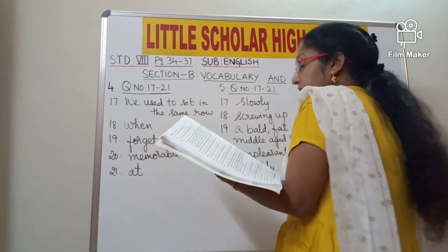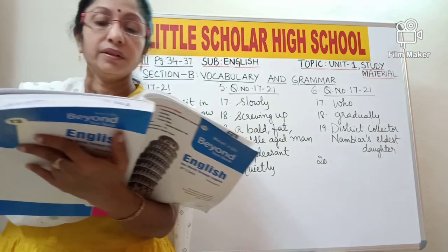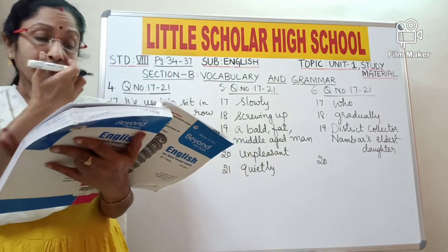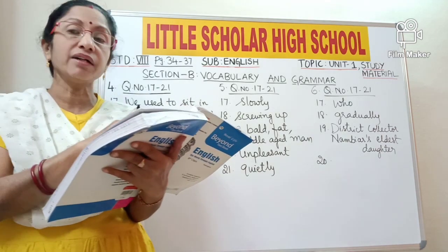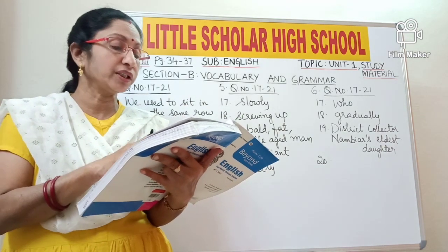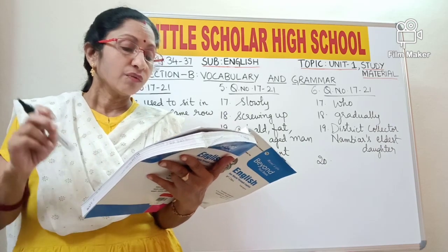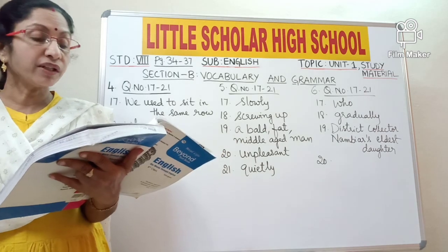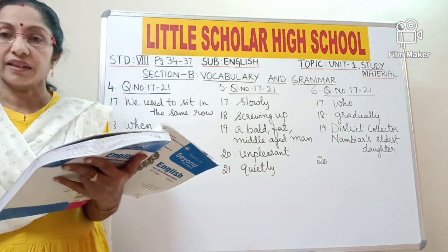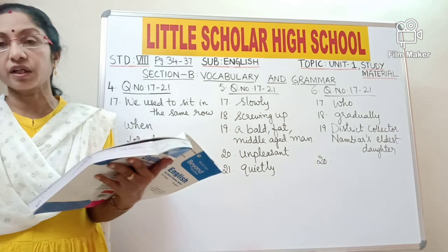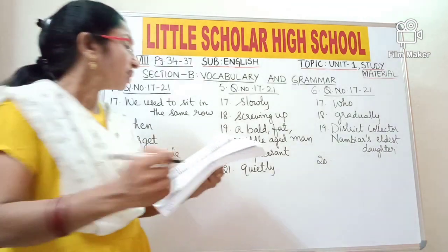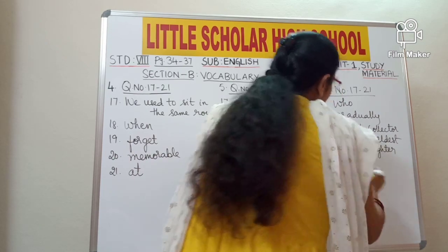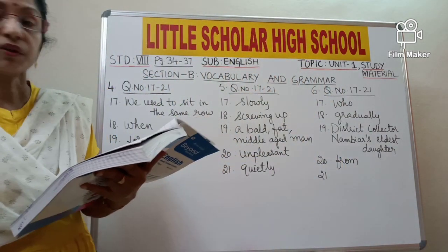Question number 20: 'Was there a letter with Gopi today?' Replace the underlined preposition with the correct one. The word 'with' is underlined. It should be 'Was there a letter from Gopi?' — 'from' is the correct preposition. So 'with' will be replaced with 'from'.